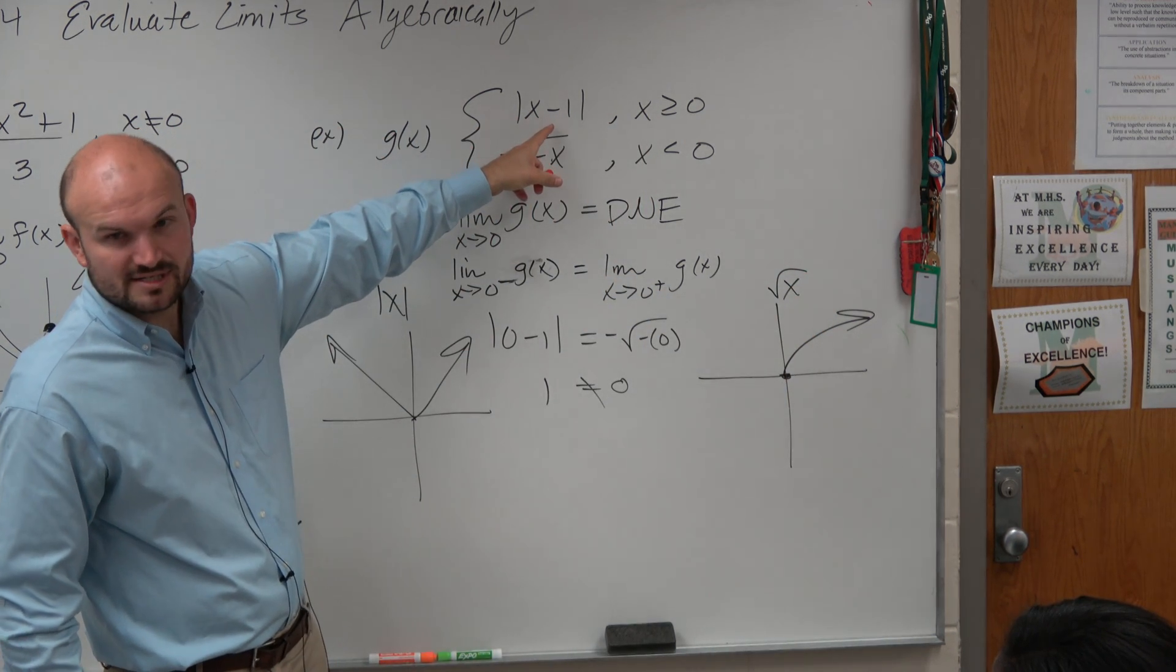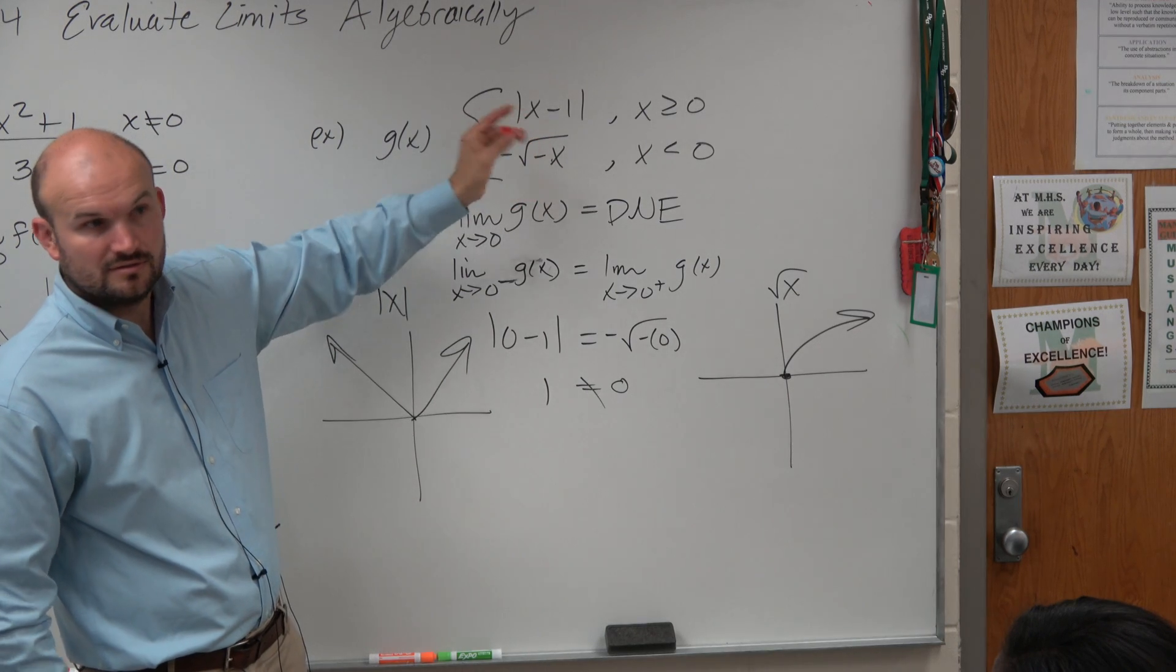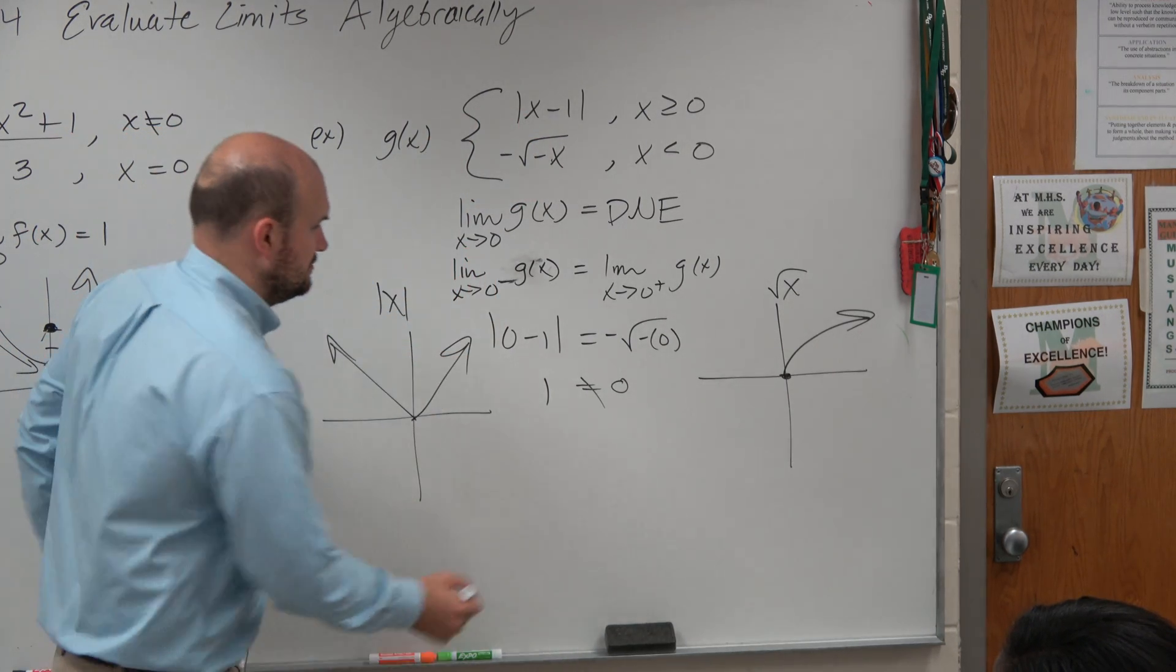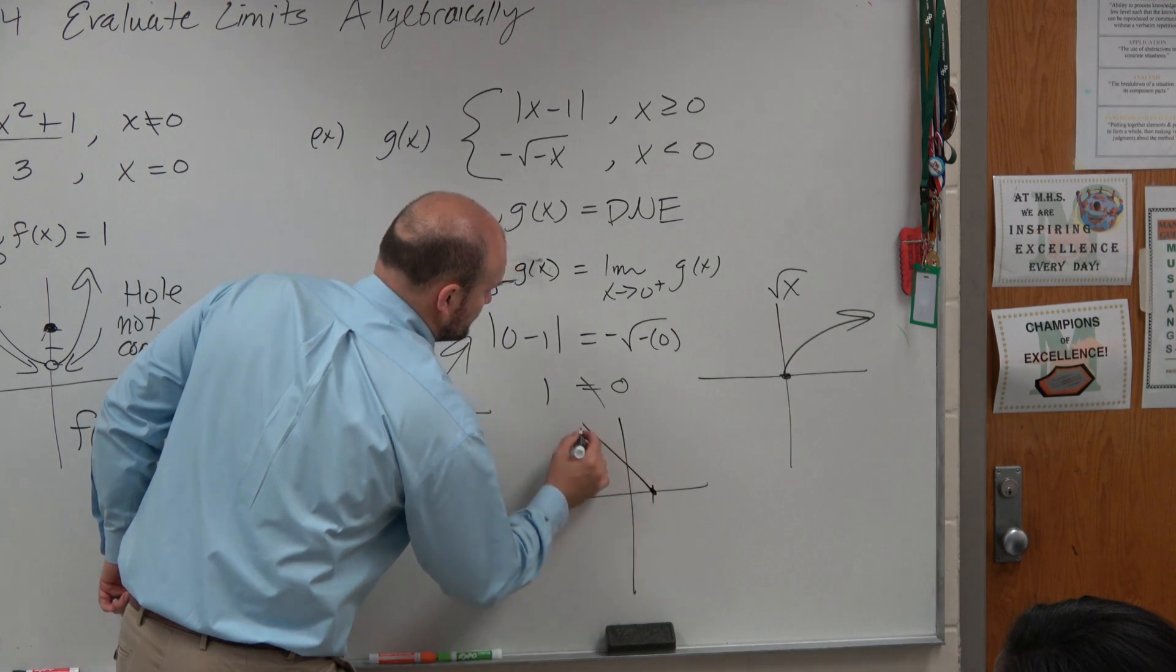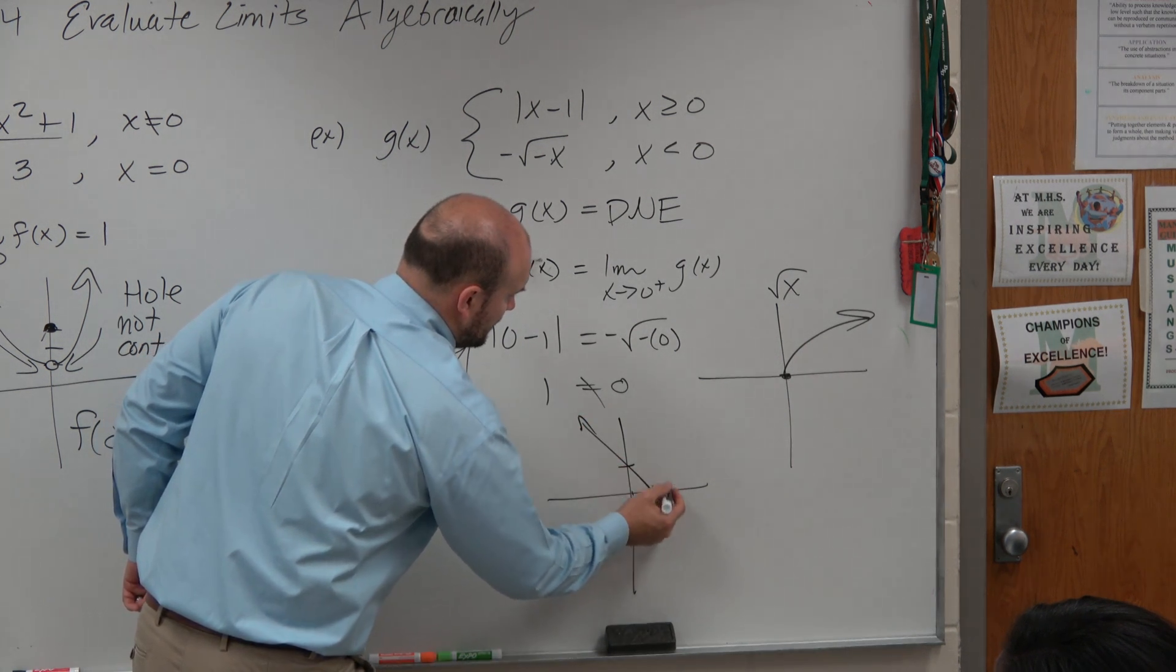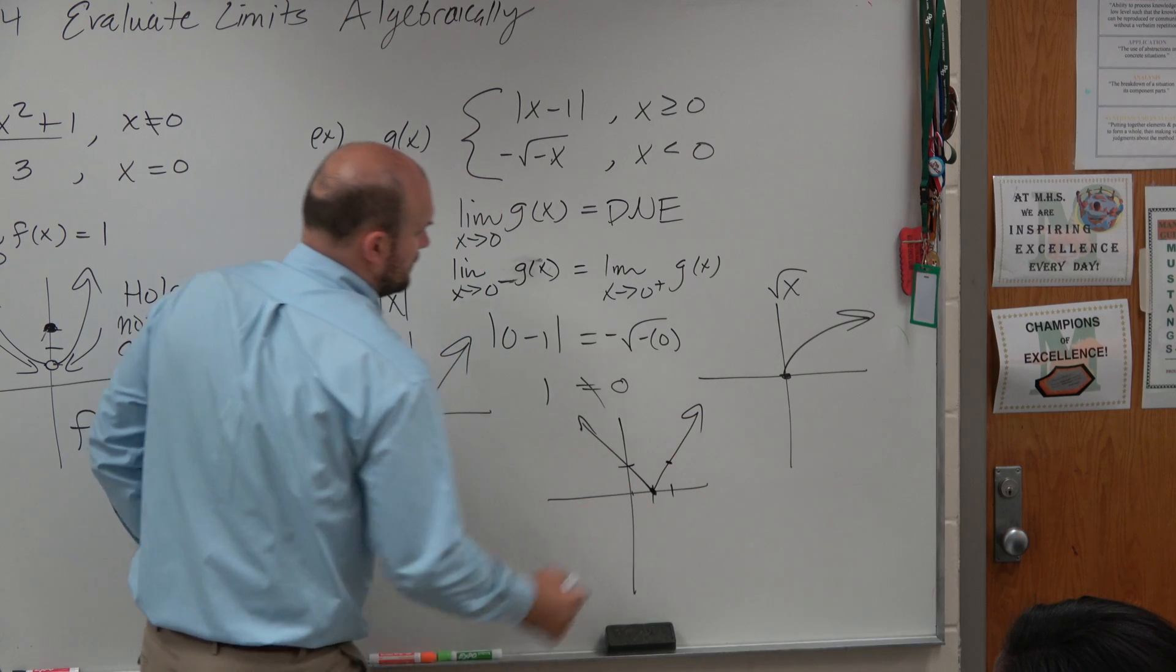So this x plus 1, what is that really doing to the graph? Shifting it over to the right one, right? So it's going from here. Up 1 over 1. Up 1 over 1. Okay?